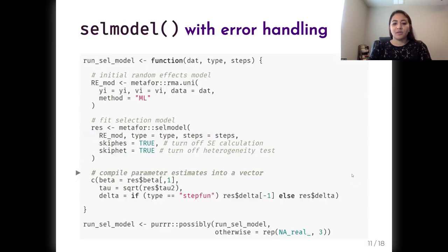Here's a function to run a selection model. Inside the function, we first fit an RMA-UNI meta regression model. We then use the selmodel function from metafor to fit a selection model. We don't need standard errors to be calculated in this step, so we're skipping those calculations here, which speeds things up. We then compile parameter estimates as a single vector. Further, we use the possibly function from purrr to handle errors. By passing run_sel_model through possibly, it will now spit out NA in case there are any convergence issues or any errors when running the selection model.